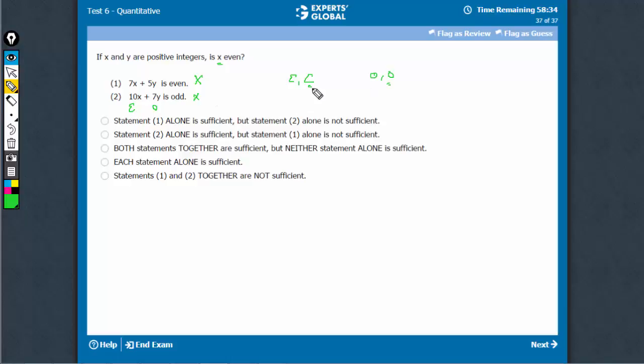On combining, we know that either both are even or both are odd. Statement 2 says that y is odd. Therefore, this condition is not possible. It has to be this condition and therefore, combining works.